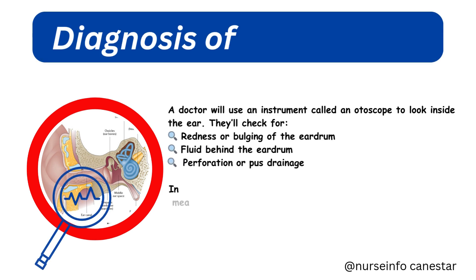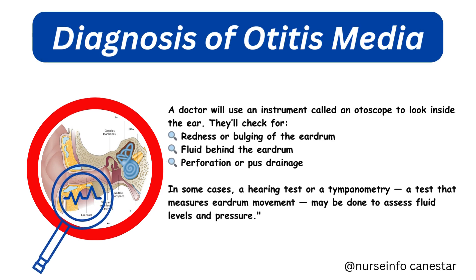Diagnosis of otitis media is usually straightforward. A doctor will use an instrument called an otoscope to look inside the ear. They'll check for redness or bulging of the eardrum, fluid behind the eardrum, and perforation or pus drainage. In some cases, a hearing test or tympanometry — a test that measures eardrum movement — may be done to assess fluid levels and pressure.